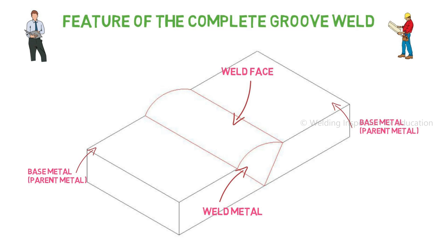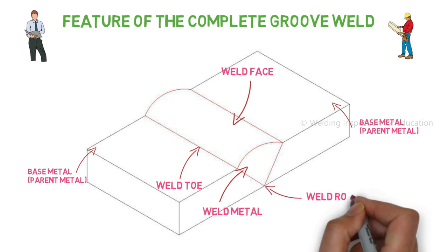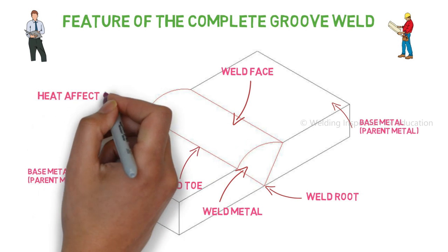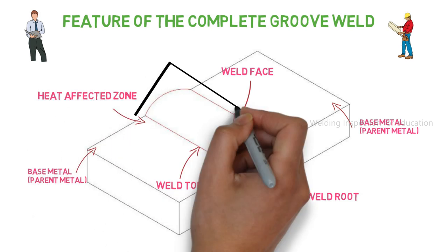The outside surface or exposed surface of the weld metal is called the weld face. Most of the weld discontinuities are present on the weld face. The intersection between parent metal and weld face is called the weld toe. Based on the weld application, there are two weld toes on both sides of the joint. The bottom part of the joint is called the weld root.